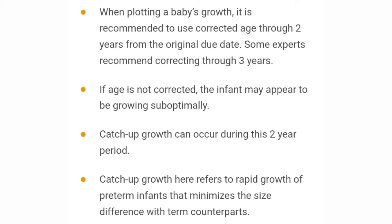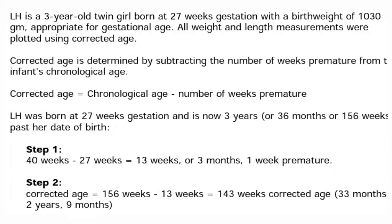For example: a three-year-old girl born at 27 weeks of gestation. Considering term to be 40 weeks, she was 13 weeks preterm, which equals 3 months. From the chronological age of 36 months, we subtract 3 months, giving a corrected age of 33 months. So we plot her at 33 months on the growth chart, not 36 months.